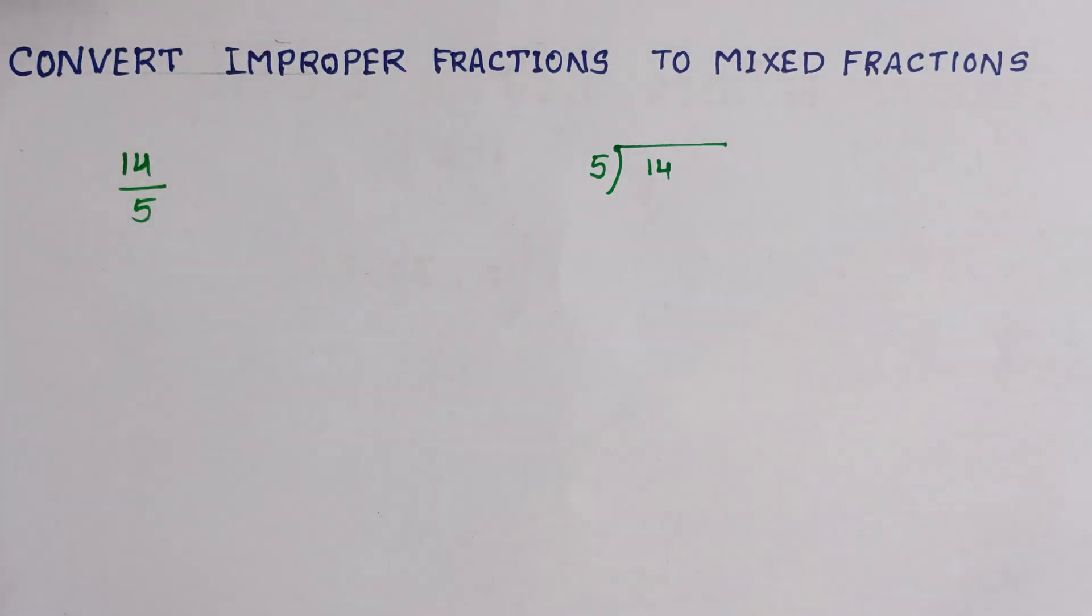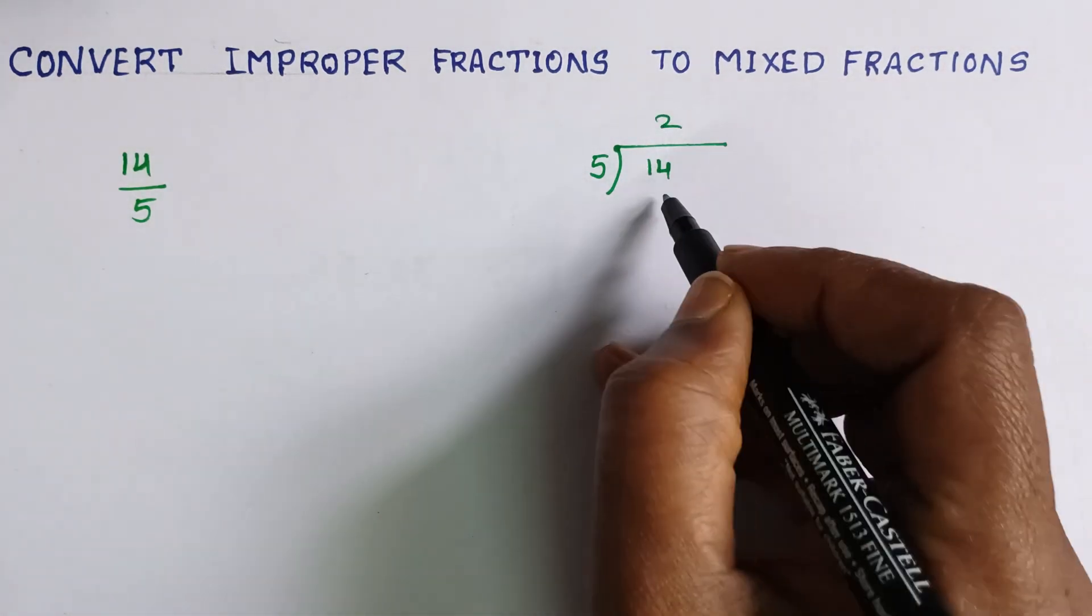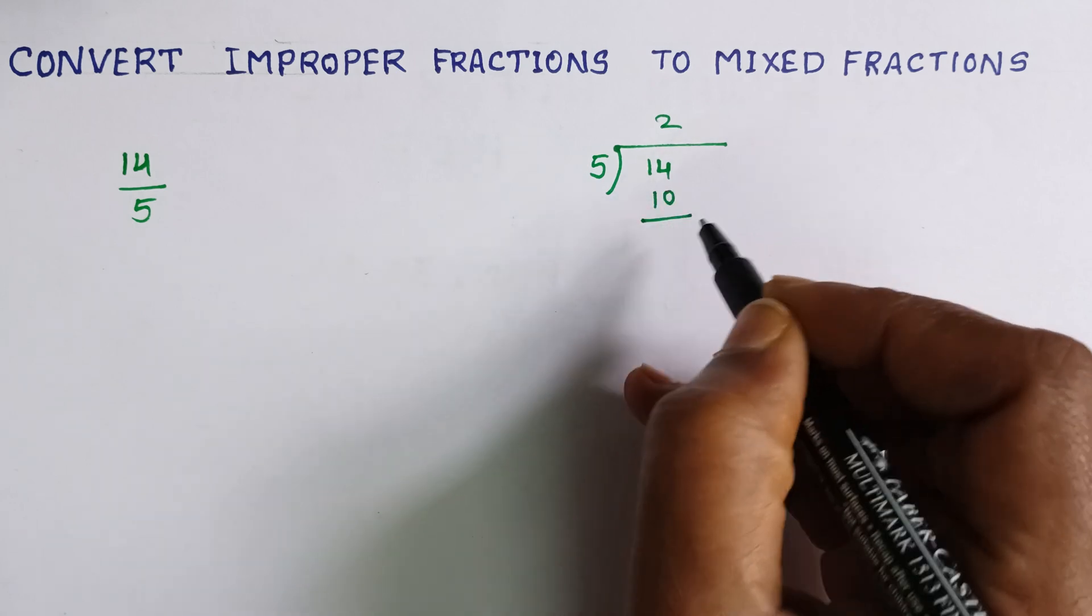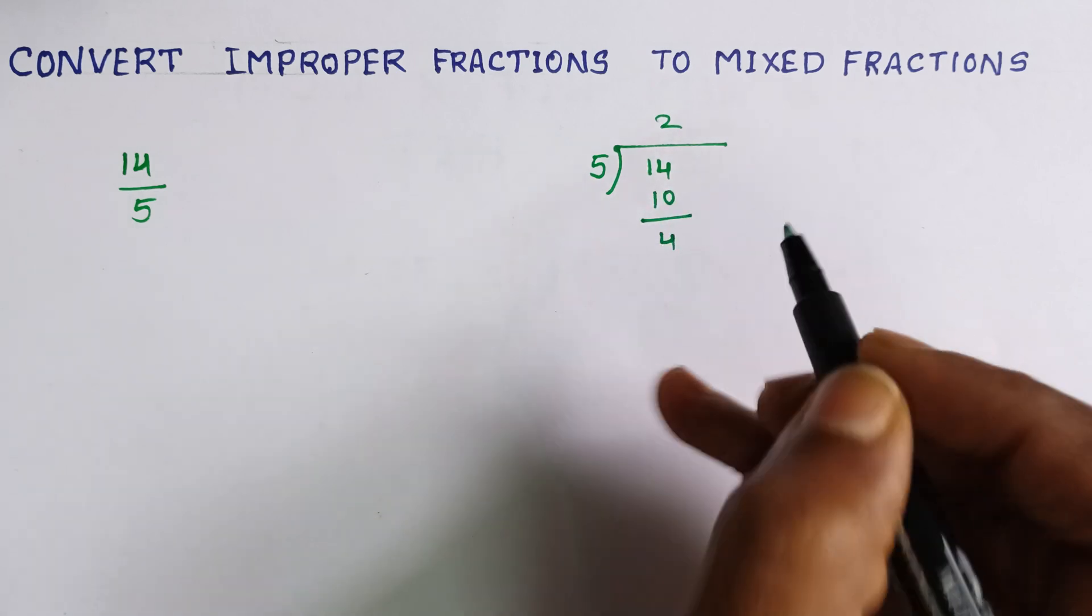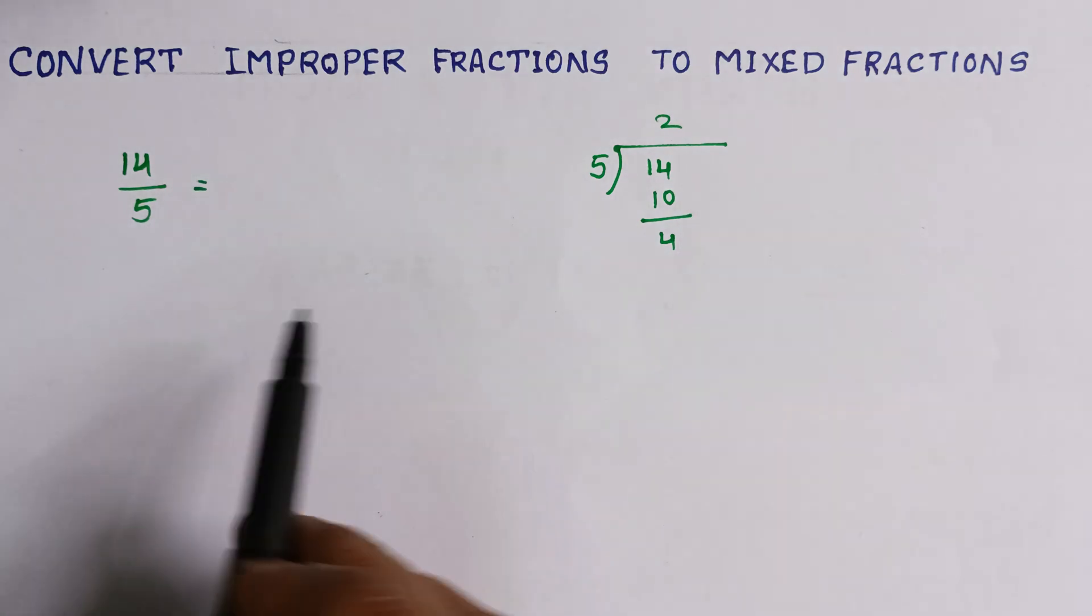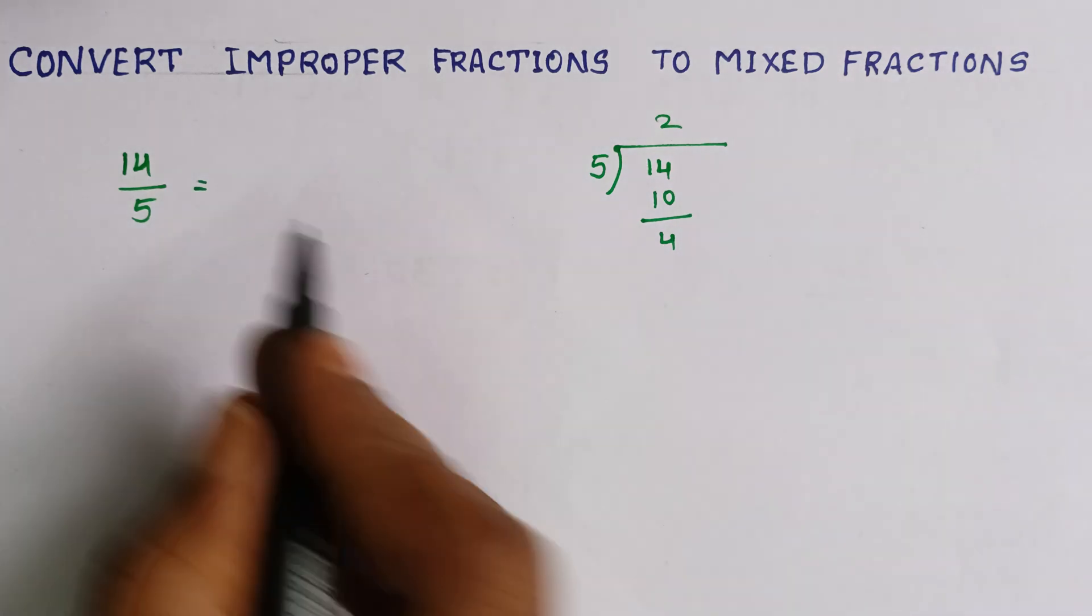5 into 14, 10. The 4 is a remainder. So using this, we can write it into mixed fractions.